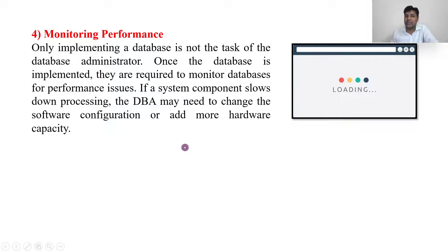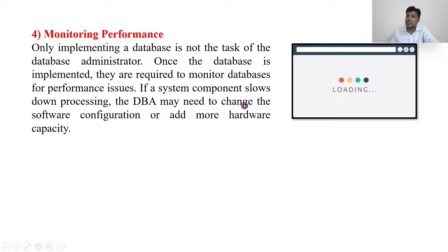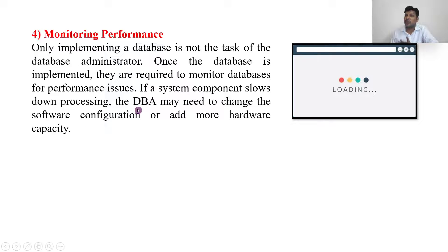Next: monitoring performance. Just installing and connecting the server is not sufficient — the DBA has to check regularly. For example, if the system gets slow or hangs, the DBA monitors the situation. If a system component slows down, the DBA may need to change the software configuration or add more hardware capacity, such as adding more hard disk or updating the software configuration to run properly.